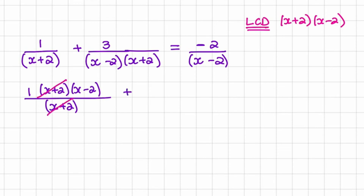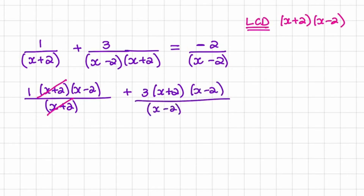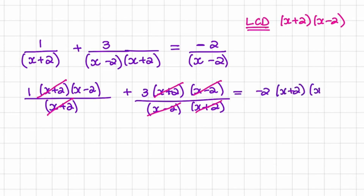Then in the second term, we have 3 times x plus 2 times x minus 2 over x minus 2 times x plus 2. And because we are multiplying, we can cancel out the x plus 2's and the x minus 2's. And on the right-hand side, we have negative 2 times x plus 2 times x minus 2 over x minus 2, and what will cancel out is the x minus 2's.